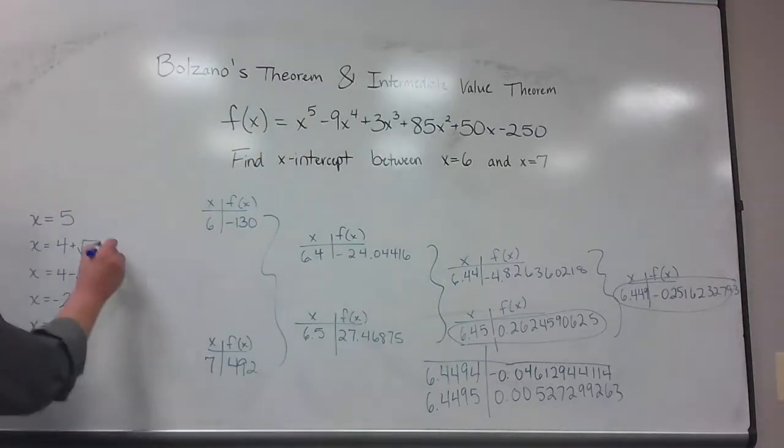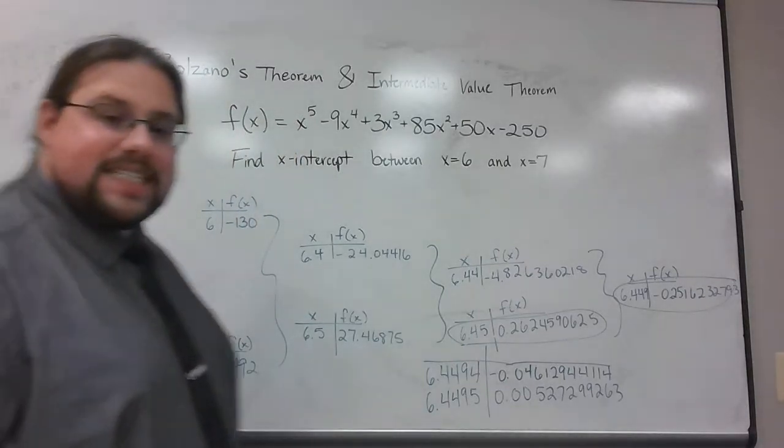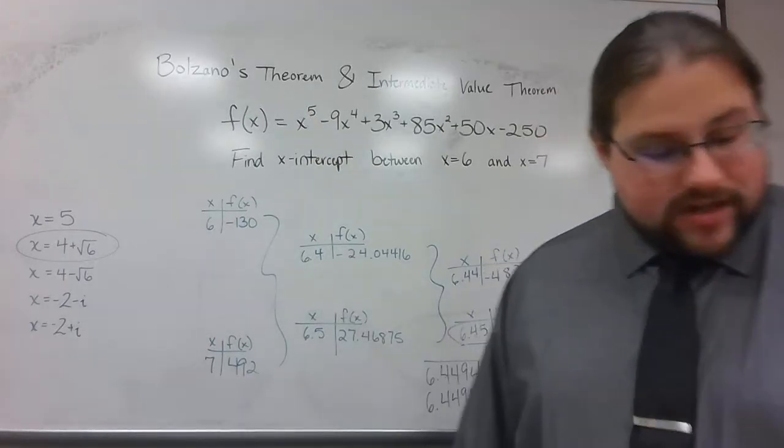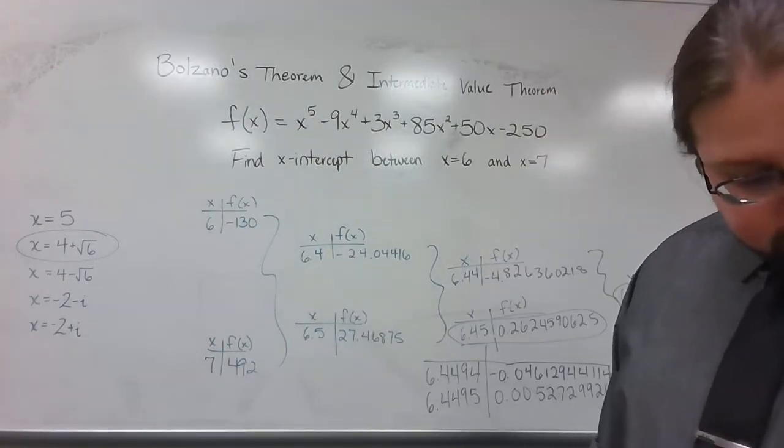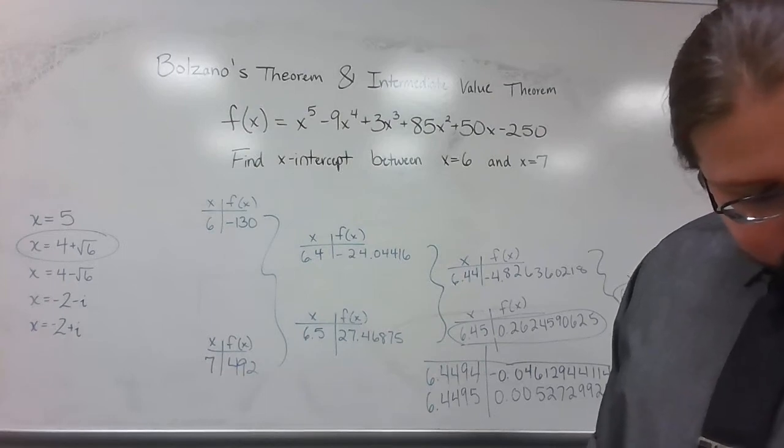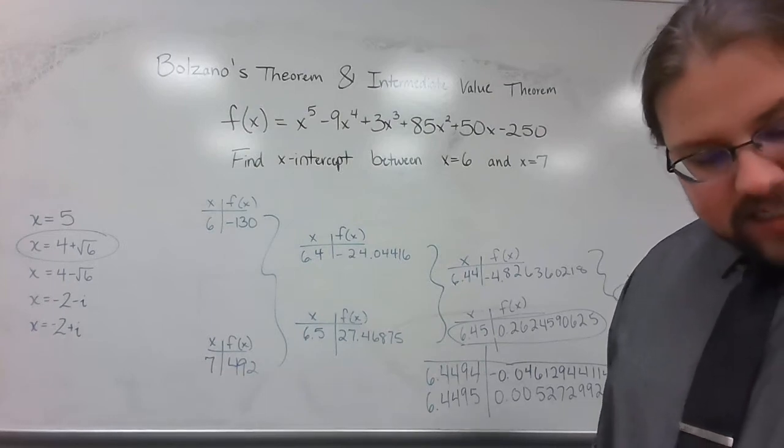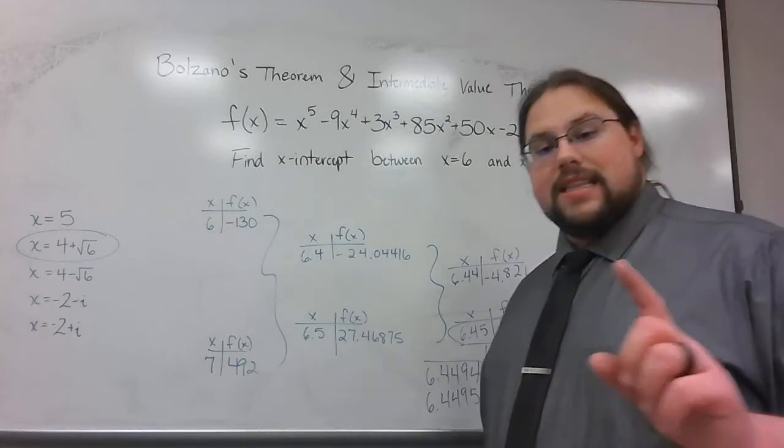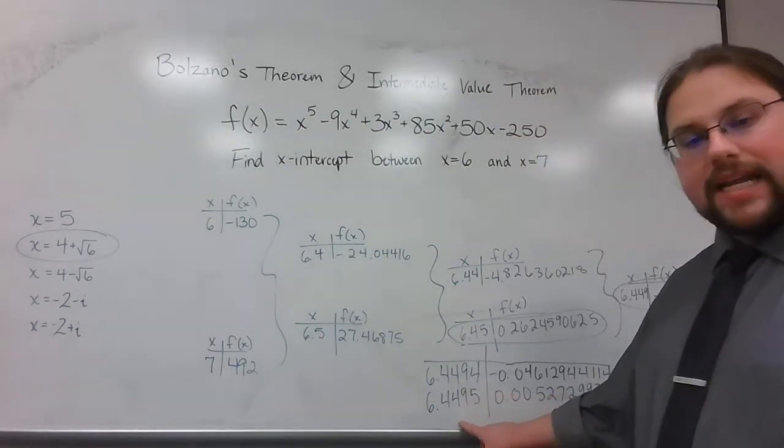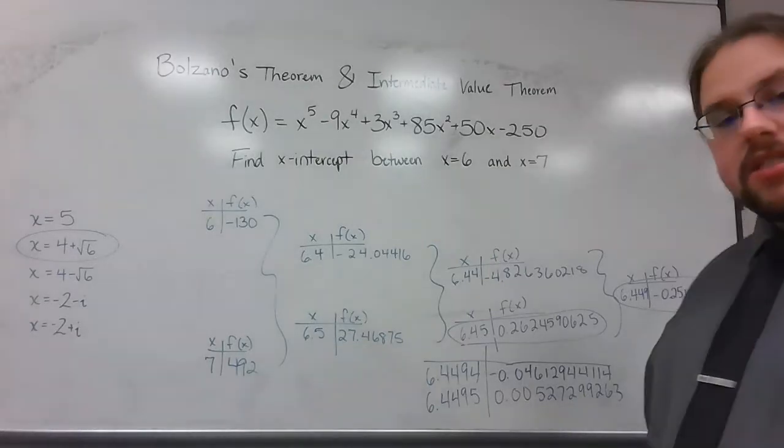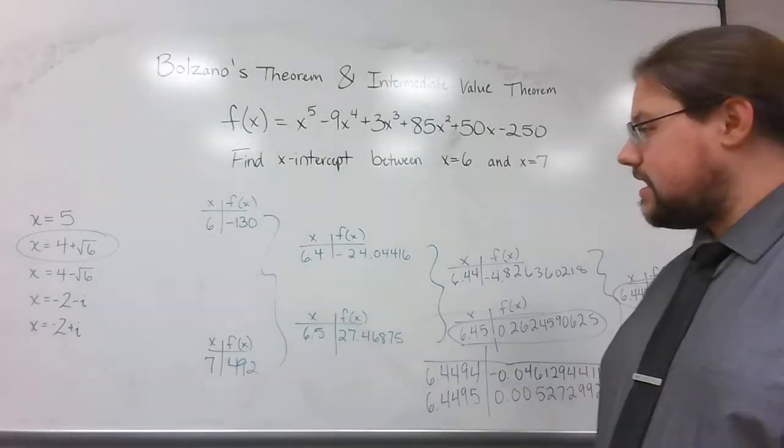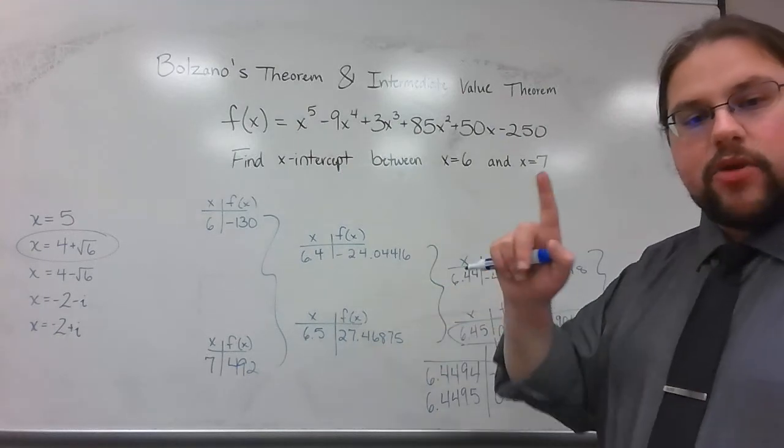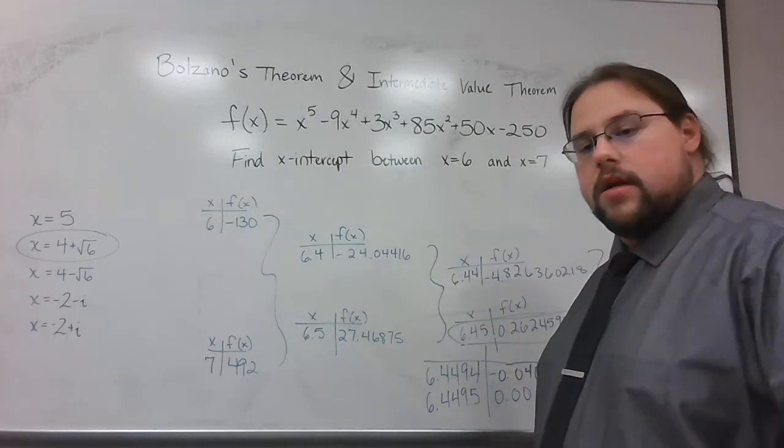Now, I'm going to point out to you, this four plus the square root of six is the exact answer, but that's not a pretty answer. In fact, four plus the square root of six is 6.449489743. That's really darn close to what I had here, 6.4495. So again, let me repeat one more time. Bolzano's theorem says, make sure you have a negative number and a positive number and you have an x-intercept in between. Hopefully that helps.